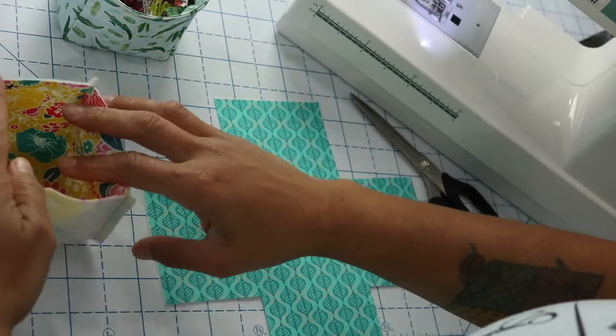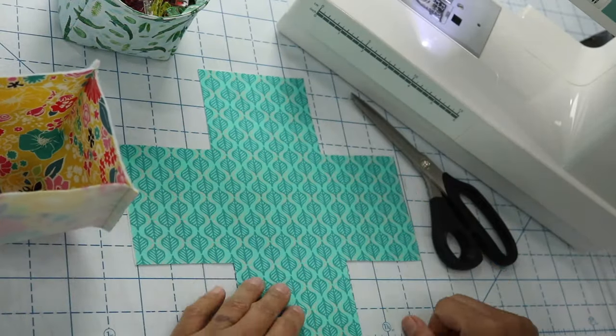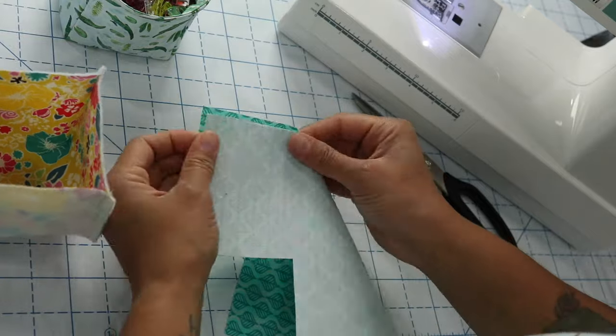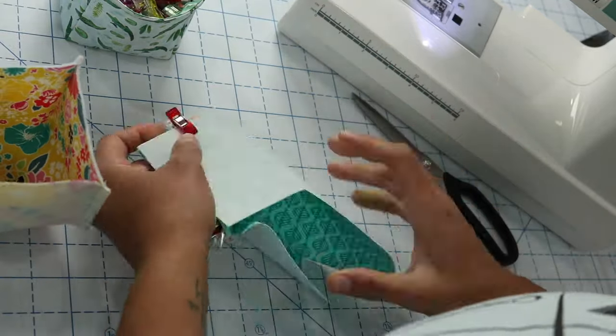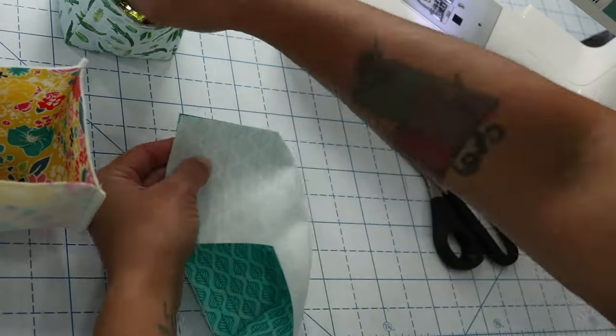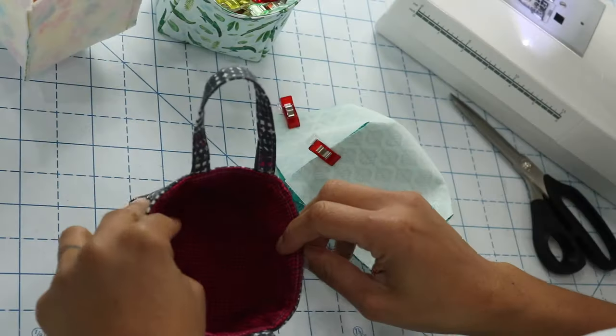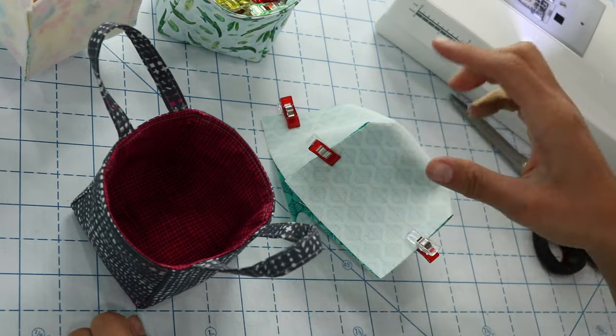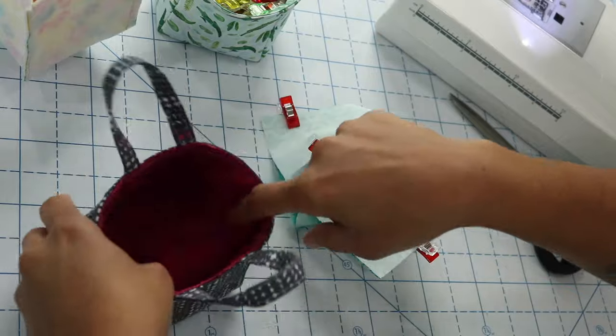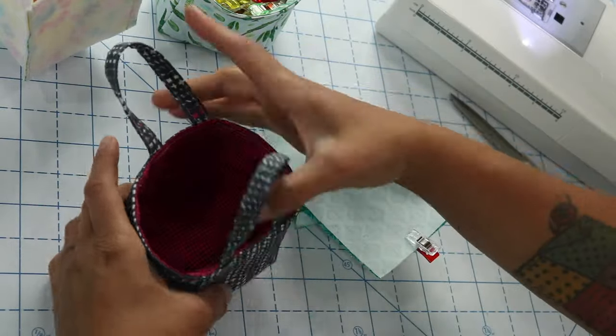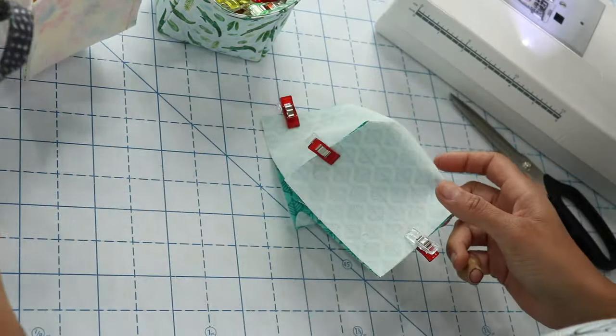All right so it should look like that. Now you're going to repeat that to do the exact same thing with the lining. Now I like to sew a slightly larger seam allowance in the lining so that I get a nice smooth finish inside of my little basket, which is a tip that I often share for bag making.